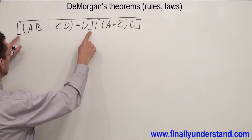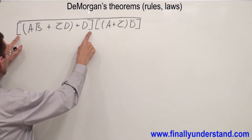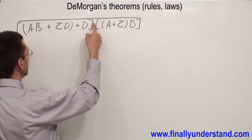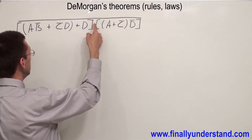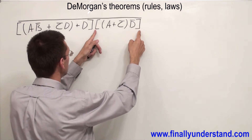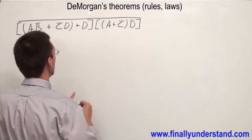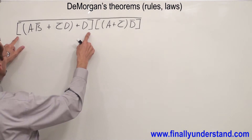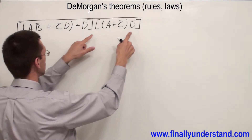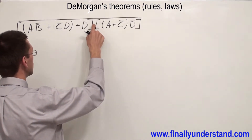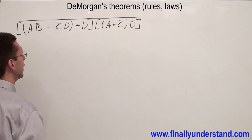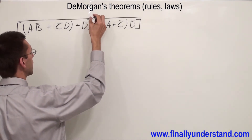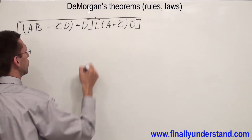Look at the brackets first. These brackets are NANDed with these brackets. So it means we have two big terms joined together by NAND.